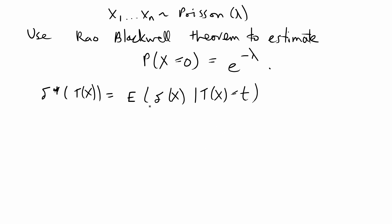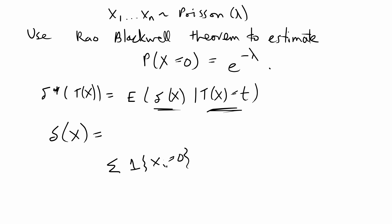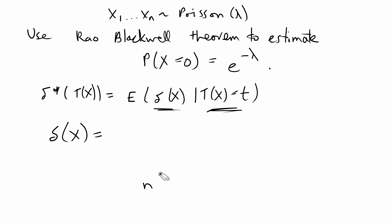Now let's do this particular problem. You just have to plug in two things to solve it. The first thing is to get the original estimator. For these types of problems, you can plug in what's called the empirical CDF, which is an average of indicator functions — since this is a discrete distribution. In this case I'm just going to use the first value and say that my estimator is that if x1 is equal to zero, that's an estimator of P(x=0). It's not necessarily a good estimator, but we're going to put it through the Rao-Blackwell formula to make it better anyway.